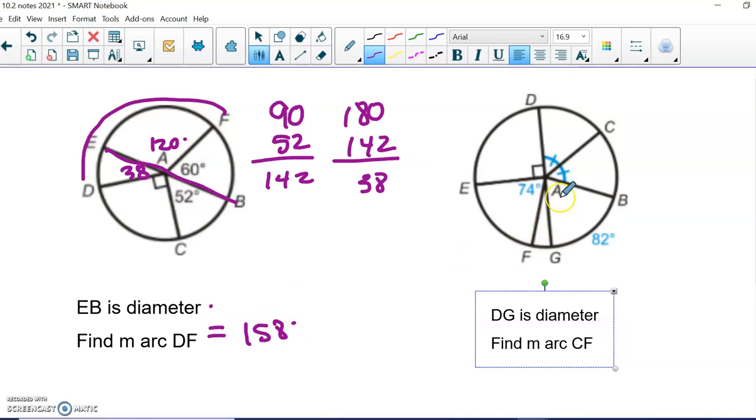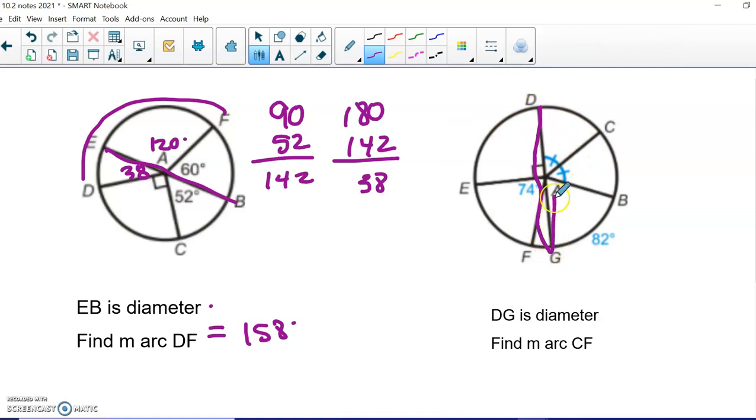All right, here we go again. So I know this is a semicircle because they're telling us this is the diameter. So I'm going to take 180 minus the 82. Looks like we have 98 left over. I'm going to split it in half because they're telling us that these two angles are congruent. So that's 49. Let's try 49, 18. Yeah, that's right. So each of these are 49.